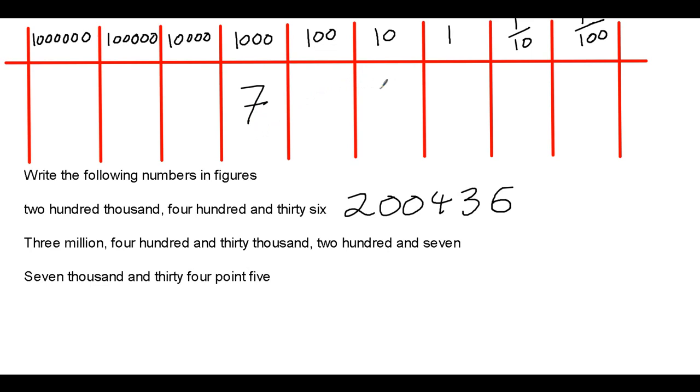34, 3 in my tens column, 4 in my units column, and the 0.5 refers to 5 tenths, so I put 5 in the tenths column.